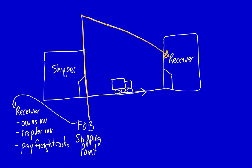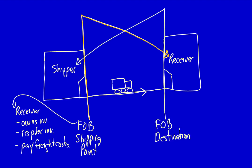You can now imagine what it means if the shipping terms are FOB destination. Remember the definition of FOB — free on board to the receiver — so that means it's free to the receiver while it's in transit, until it arrives at the receiver's doors, the destination. That means that the shipper owns the inventory, is responsible for the inventory, and pays the freight costs.